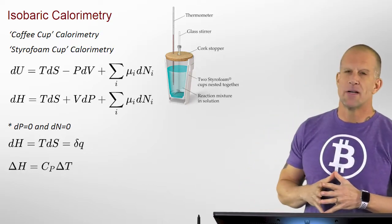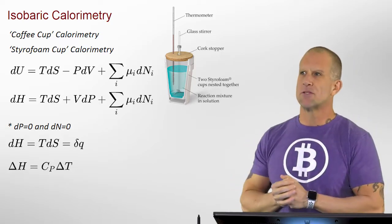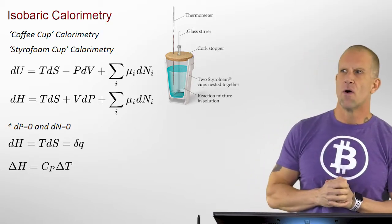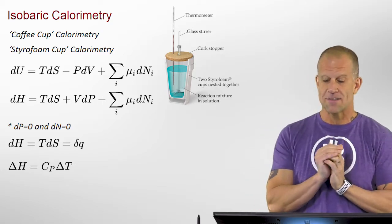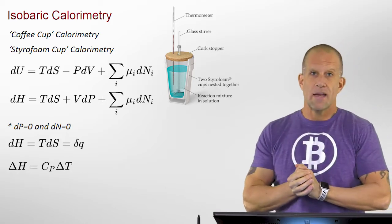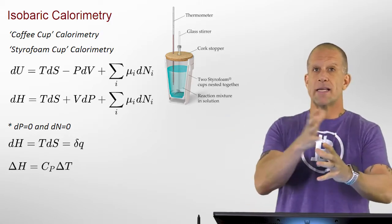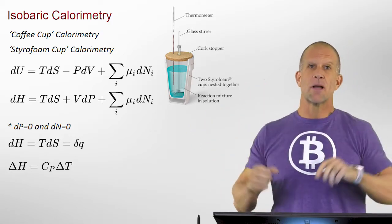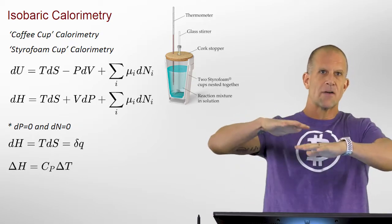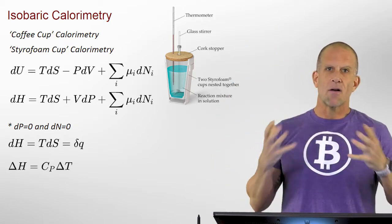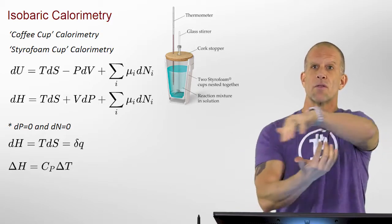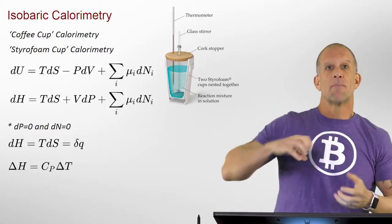Isobaric calorimetry is often called by several different names in introductory chemistry or physics classes — they're often called coffee cup calorimeters or styrofoam cup calorimeters, because those are the apparatuses used. The goal is to crudely create an adiabatic container, something where heat cannot transfer out. This is done using styrofoam cups or thermal insulators such as Dewars, with a lid to keep evaporation from happening. The contents are often stirred so that everything mixes quickly and remains isotropic at all times.